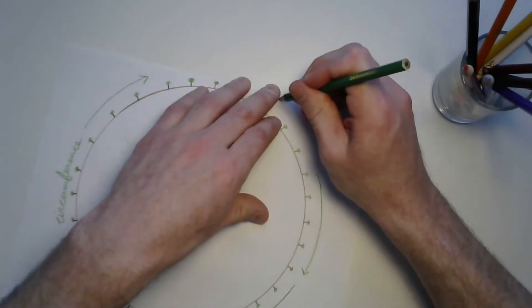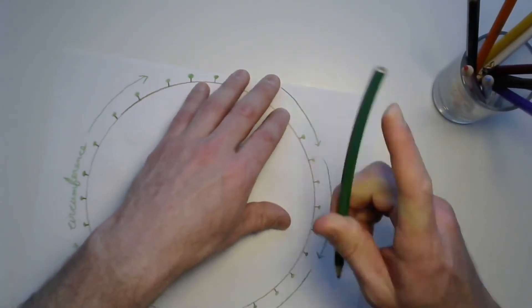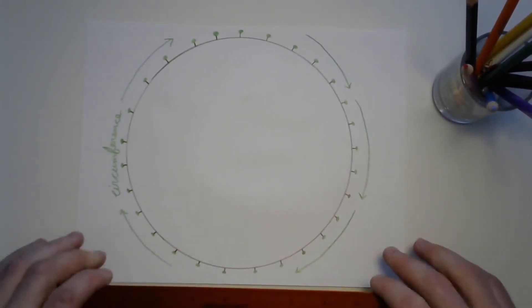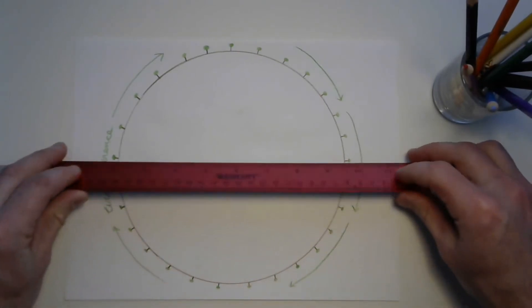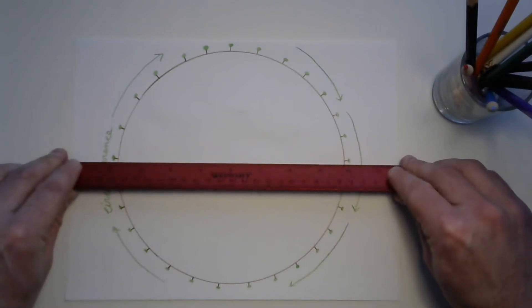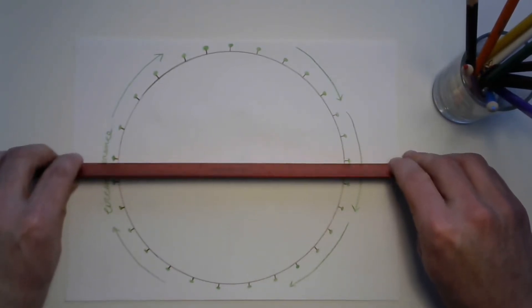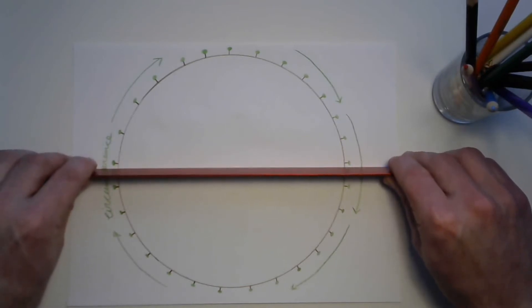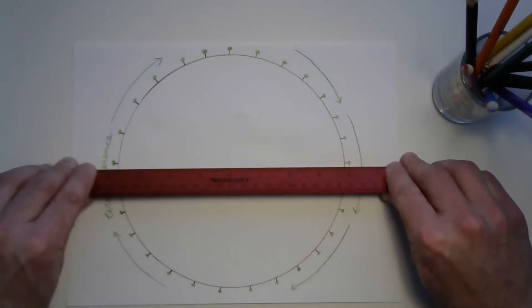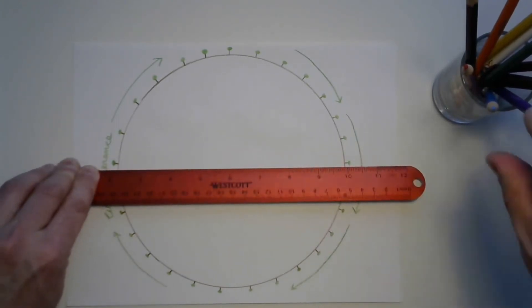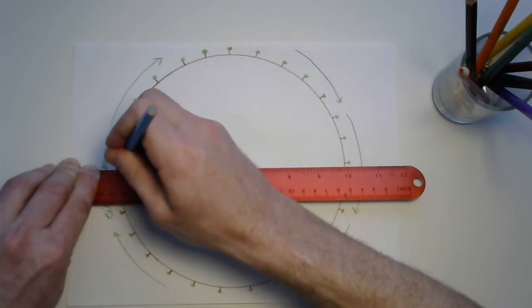But there's something else here. Let's take our straight edge. And the best that we can, let's try to cut our circle in half. It's going to be sort of hard. What we really want to do is try to find a line that splits it perfectly in half. Do you think you've got it? I think I'm pretty close. Look at that. I'm going to take a line and cut that circle in half.